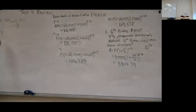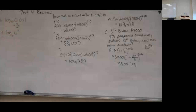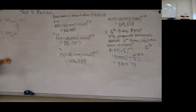Problem 7 is log base 6 of 6 to the 2nd power. You can push that in on the calculator, but here's a trick: any time the base matches the result raised to a power, your answer is going to be that exponent. All these you can punch on the calculator.